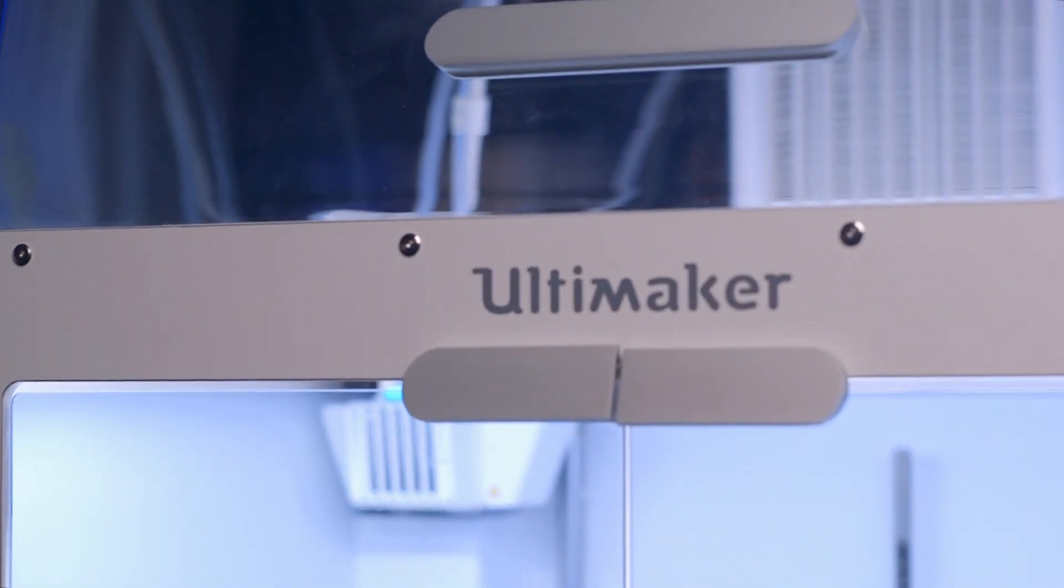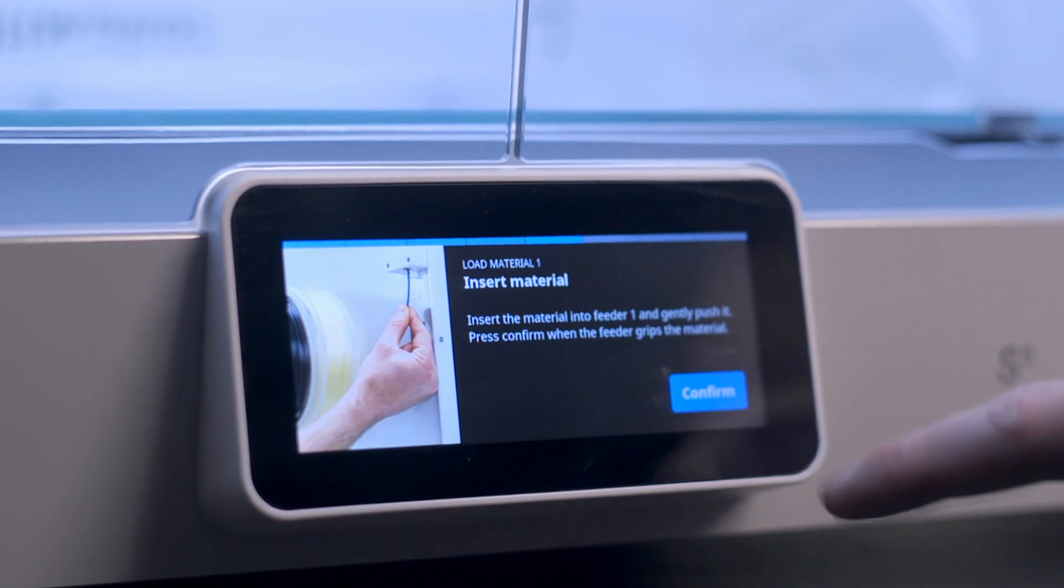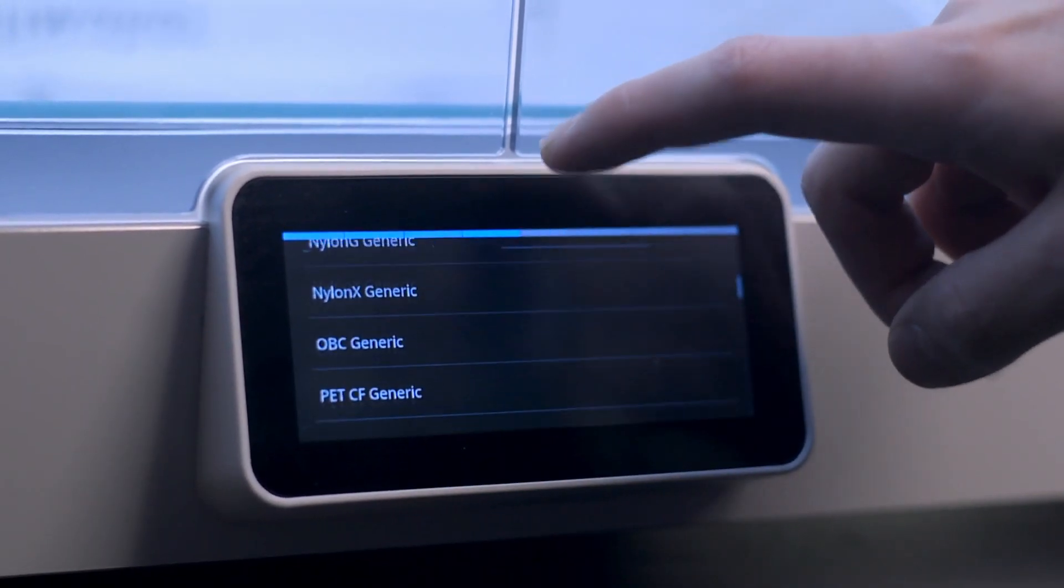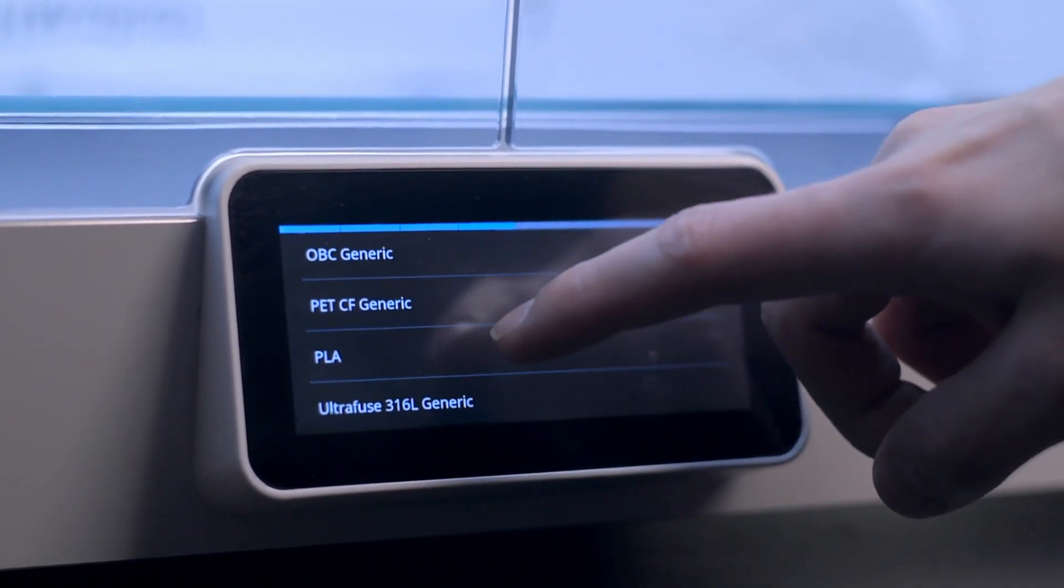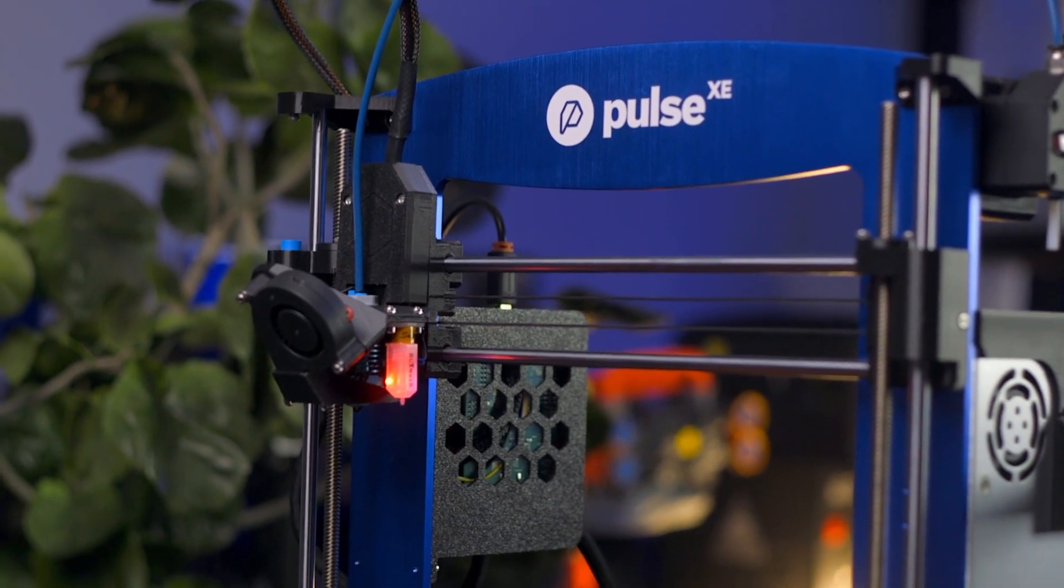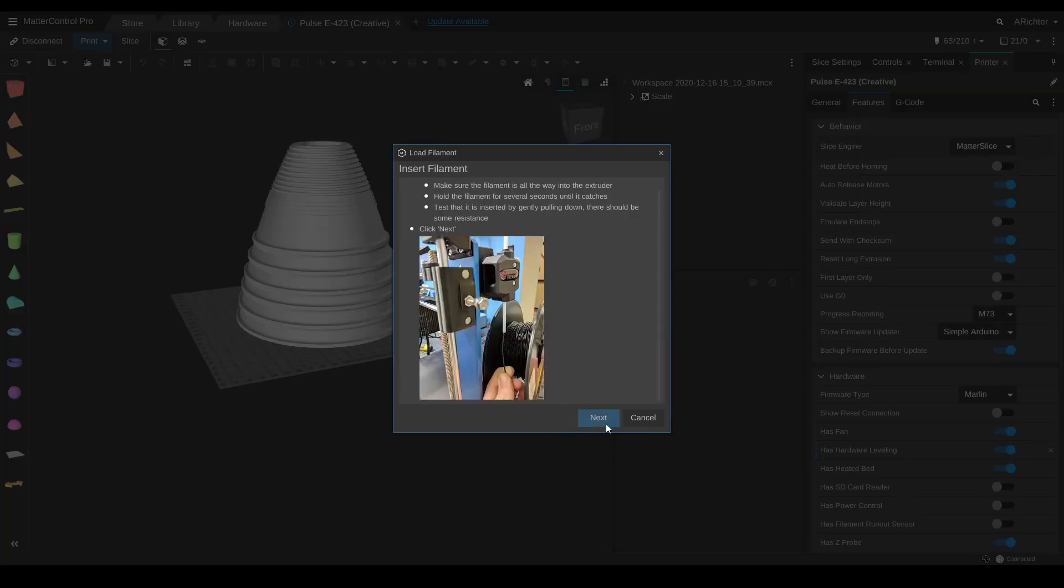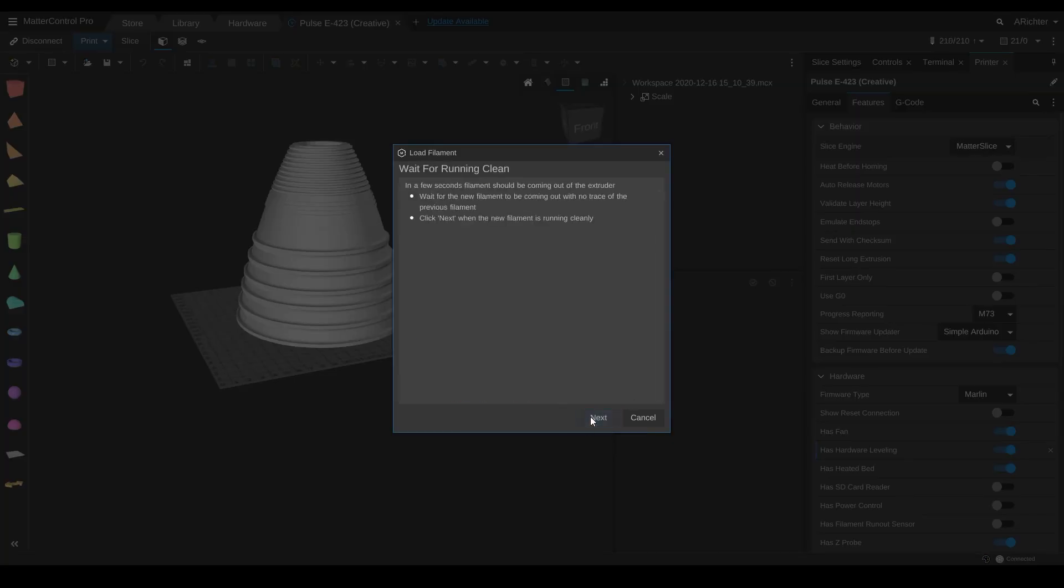3D printers like the Ultimaker S5 have pictures on the LCD to show you where to insert filament and lists to pick which material you are loading so it can heat properly. The Pulse XE utilizes macros within MatterControl to enable quick material unload and loading with minimal user intervention.